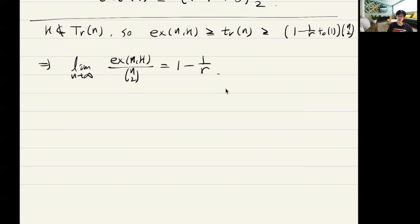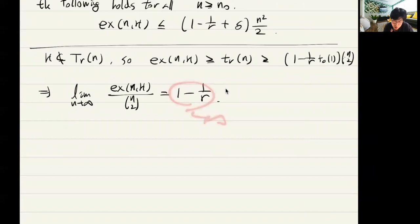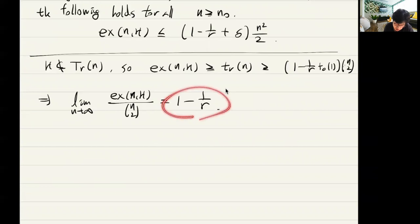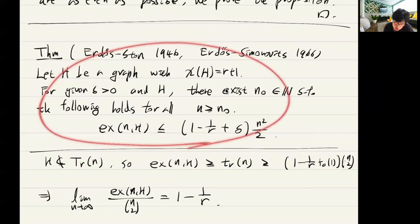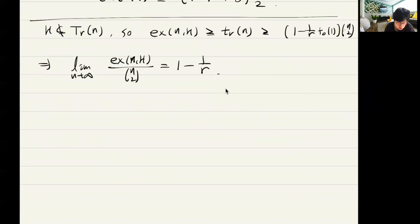This means that as n → ∞, ex(n, H) / (n²/2) → 1 − 1/r, which asymptotically determines the extremal number of H, as long as H is not bipartite. If H is bipartite, r = 1 and this limit becomes 0 — we only know the extremal number is subquadratic, but this theorem doesn't tell us how fast it grows.